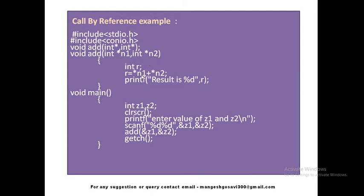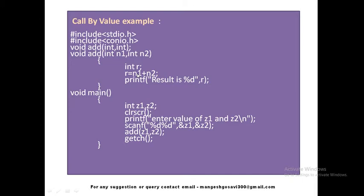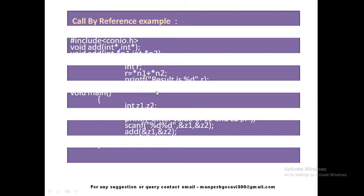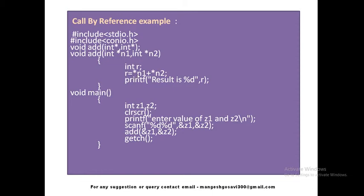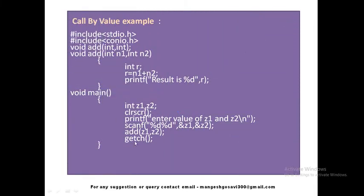There is another change in the formula. In call by value, 'r = n1 + n2' is written directly because n1 contains the actual value. But in call by reference, the formula is written as 'r = *n1 + *n2'. If we write only 'n1 + n2' here, it will perform addition of addresses, not values. To get the values, we must use the dereference operator '*', writing '*n1 + *n2', and finally the result is displayed.